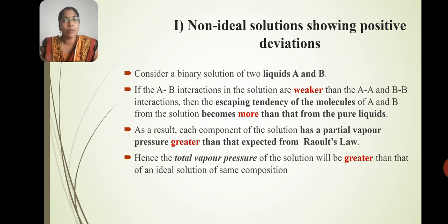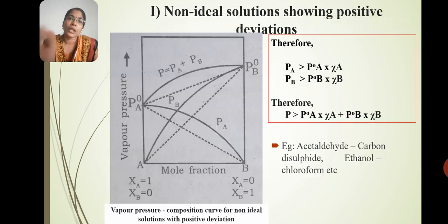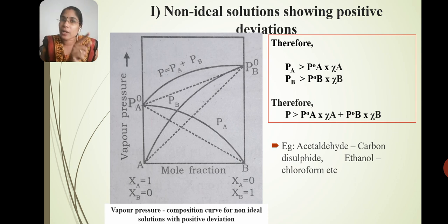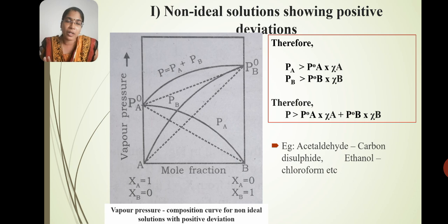So the total vapour pressure is greater than the partial vapour pressure predicted by Raoult's law. Mathematically, for the non-ideal solution: PA is greater than P°A times chi-A, and PB is greater than P°B times chi-B. Therefore, total vapor pressure P is greater than P°A times chi-A plus P°B times chi-B.